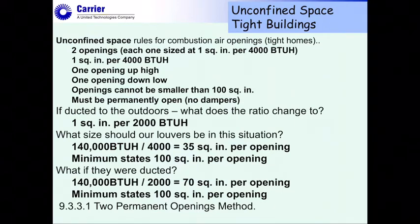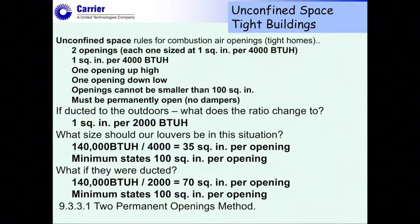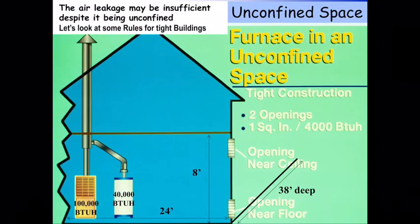Additional rules: no opening can be smaller than 100 square inches, no dimension less than 3 inches, and the openings must be permanent — no manual dampers that someone could close. If the openings are ducted to the outdoors, the ratio changes to one square inch per 2,000 BTUs, which means you need double the area.